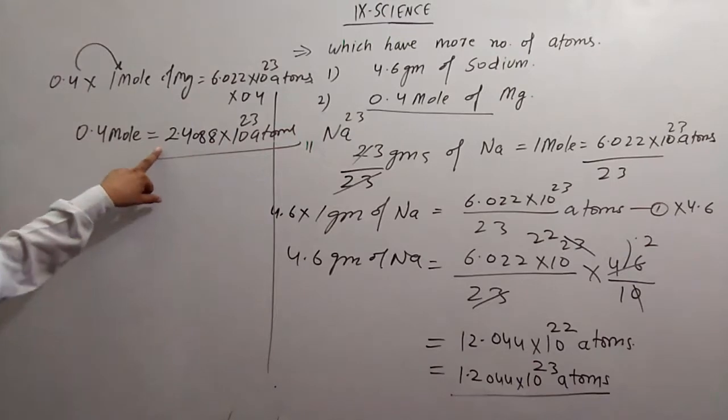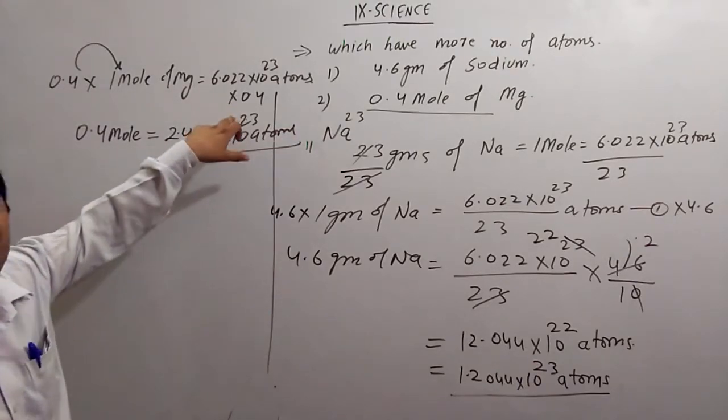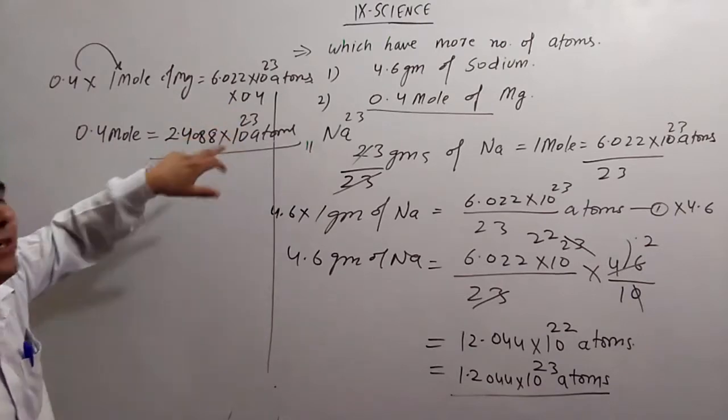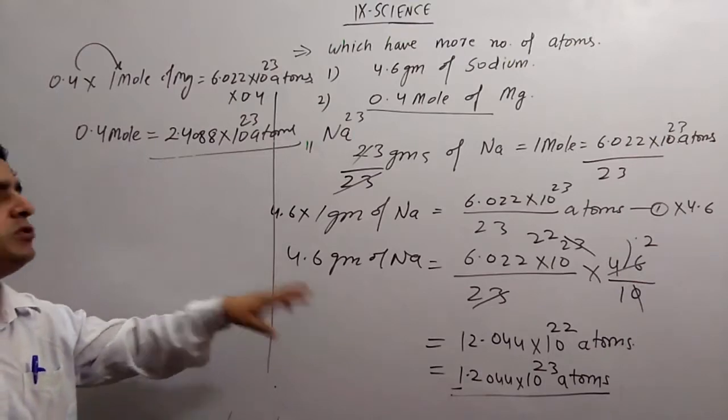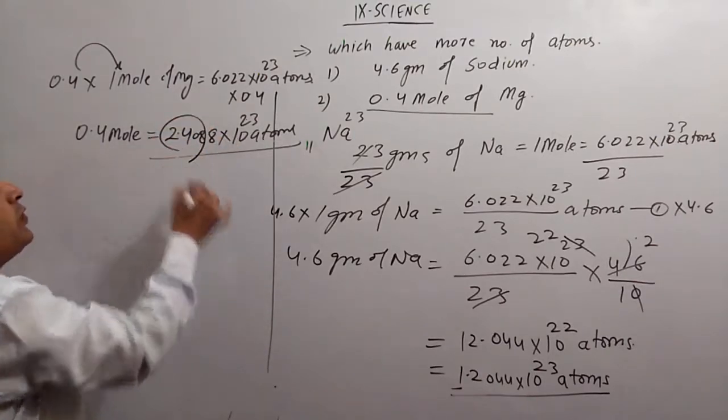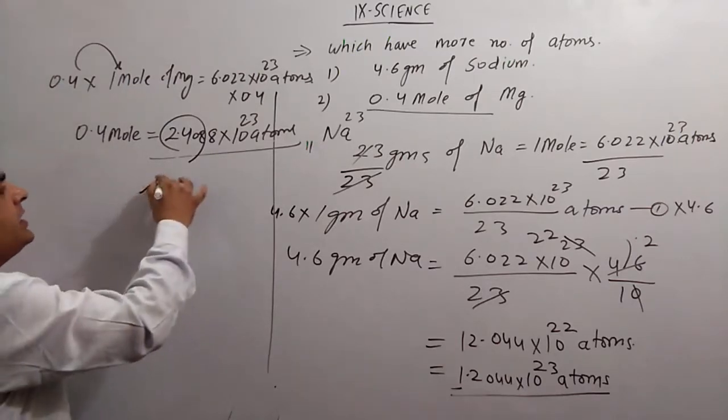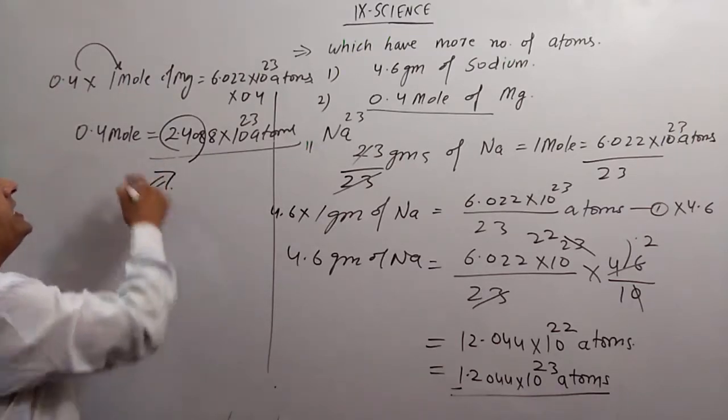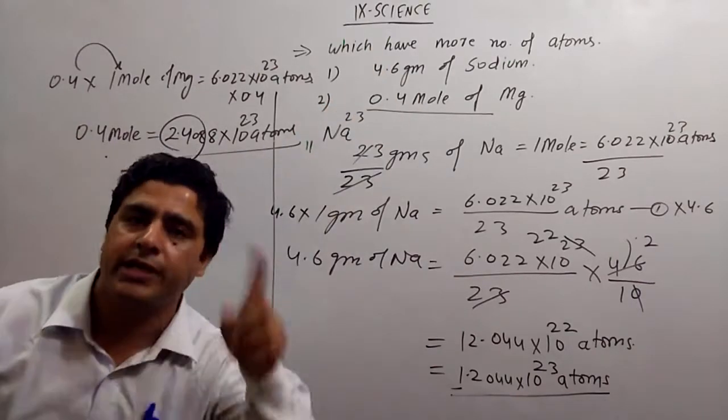Now compare: it is 2.4 × 10^23 and here it is 1.2 × 10^23. Powers are the same, but this is 2.4 and this is 1.2. This means the number of atoms is more in magnesium 0.4 mole as compared to 4.6 grams of sodium.